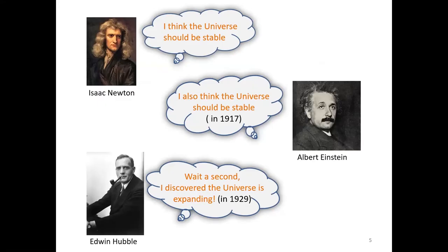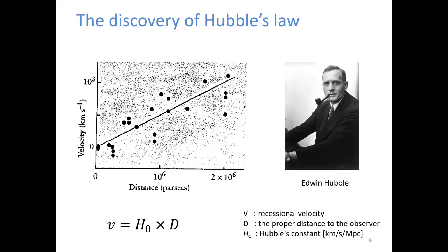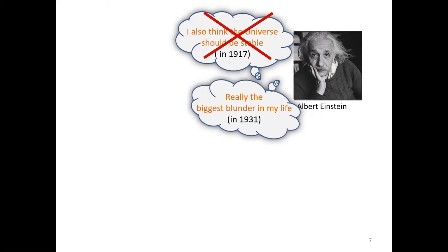12 years later, Edwin Hubble discovered the universe is expanding. This discovery showed both Newton and Einstein made a mistake. Hubble discovered the recessional velocity of the galaxy is proportional to the distance from the observer, and the coefficient H0 is the Hubble constant. Einstein accepted this expanding universe later and said the cosmological constant term he added in the Einstein equation is the biggest blunder in his life.